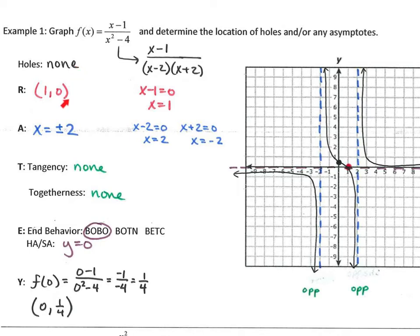To find the R — the roots — I take the numerator, x minus 1, set it equal to 0 and solve, which means there is a root at 1. I draw that on the graph. For the A, I find the vertical asymptotes by taking the denominator and setting it equal to 0. This has two parts that give me two vertical asymptotes: x equal to positive 2 and negative 2. I graph those as dashed vertical lines.